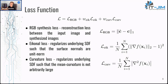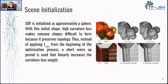During optimization, both MLPs and the features stored in the hash entries of multi-resolution hash encodings are trained jointly. Regarding the curvature loss weight: following prior works, the authors initialize the SDF as approximately a sphere, and with this initial shape the high curvature loss makes concave shapes difficult to form because it preserves topology. So instead of applying curvature loss from the beginning, a short warm-up period is used that linearly introduces this loss. On the figure we can see that without curvature loss surfaces tend to have sharp transitions, and without topology warm-up concave shapes are difficult to form.